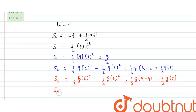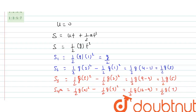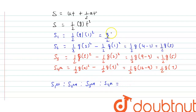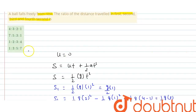Distance travelled by the body in the 4th second equals total distance in 4 seconds minus total distance in 3 seconds: ½g(16 − 9) = ½g × 7. Since ½g is common throughout, the ratio is 1 : 3 : 5 : 7. This is the correct answer — option D. I hope you have understood the explanation, thank you.